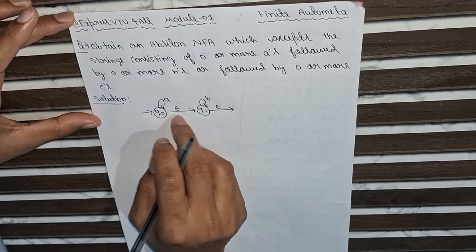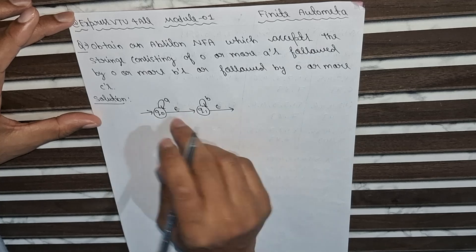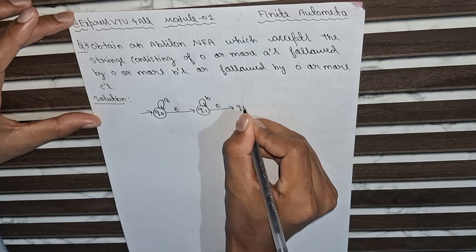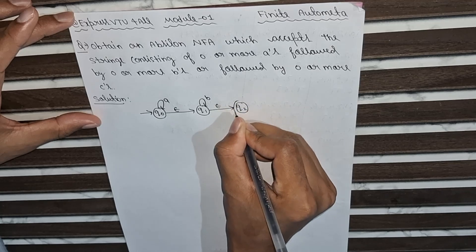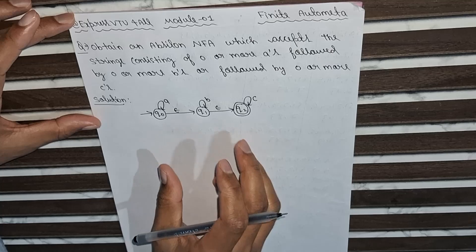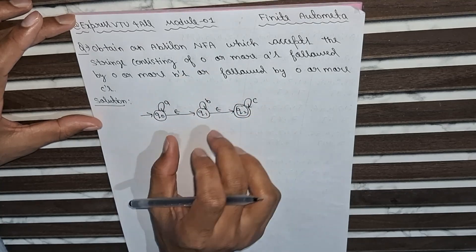Then it goes with epsilon. If a will be there, then a, then q2. This will be the final state, and here will be the self-loop of c. According to our question, this is fulfilling our need.